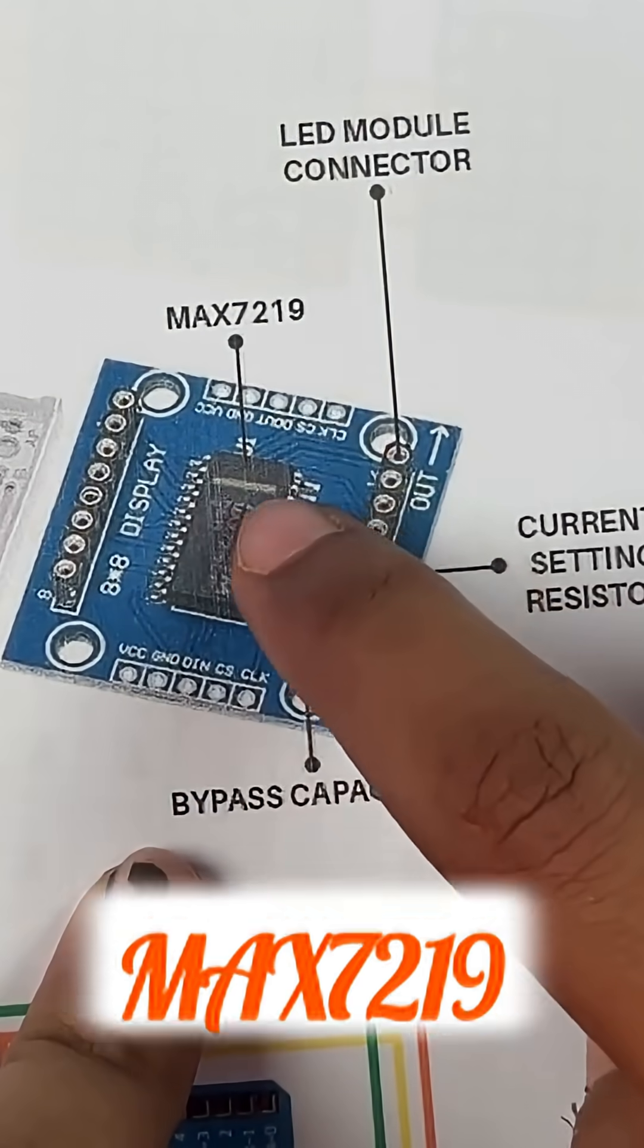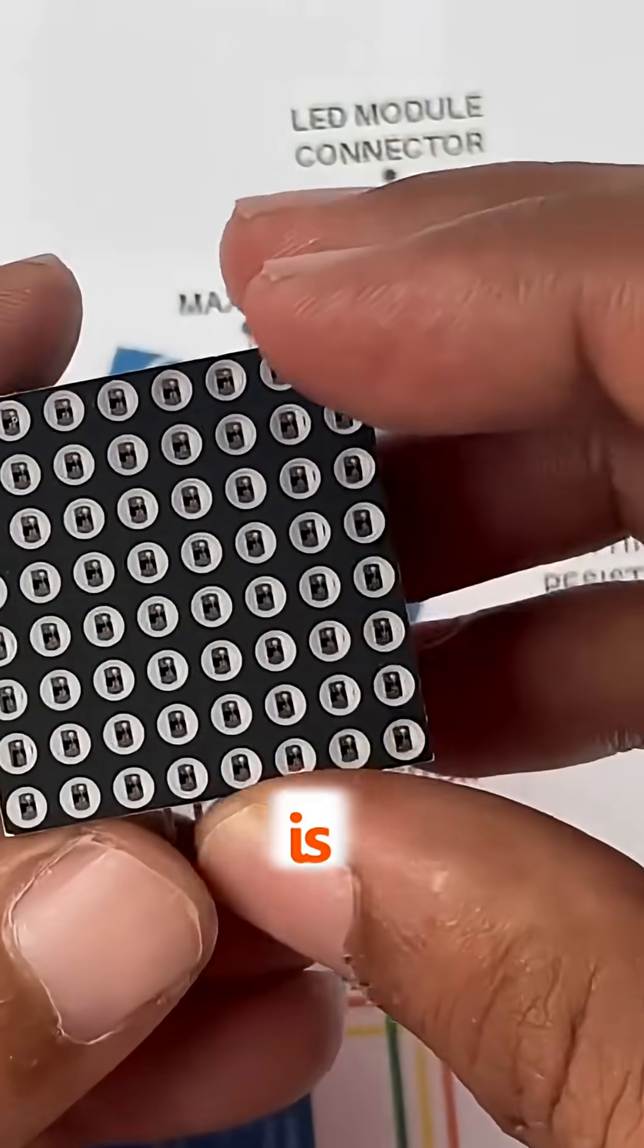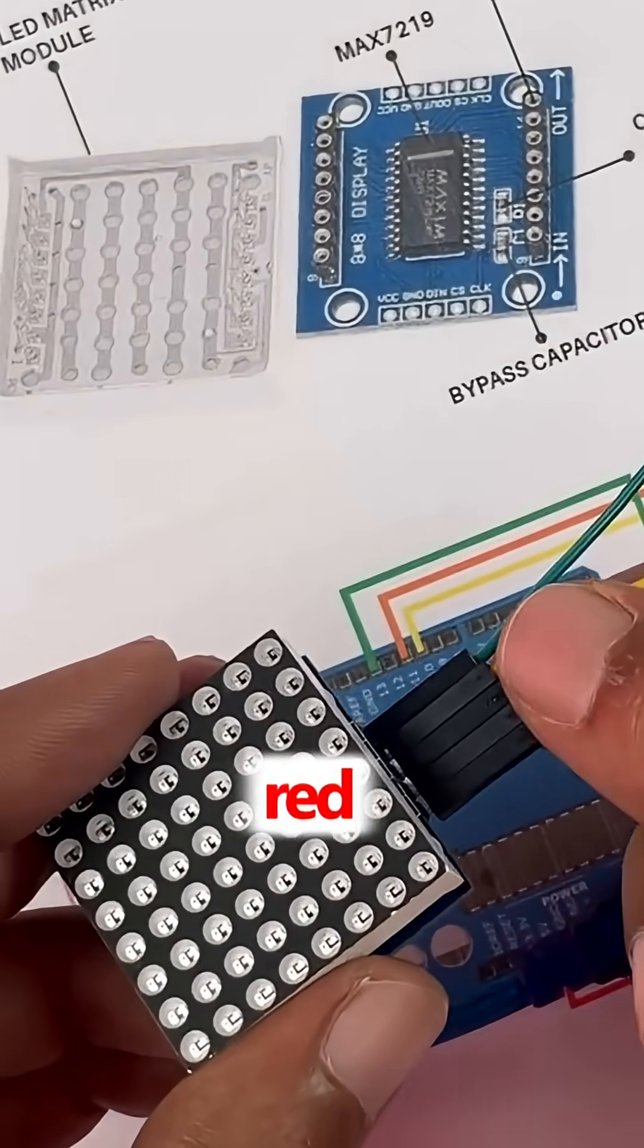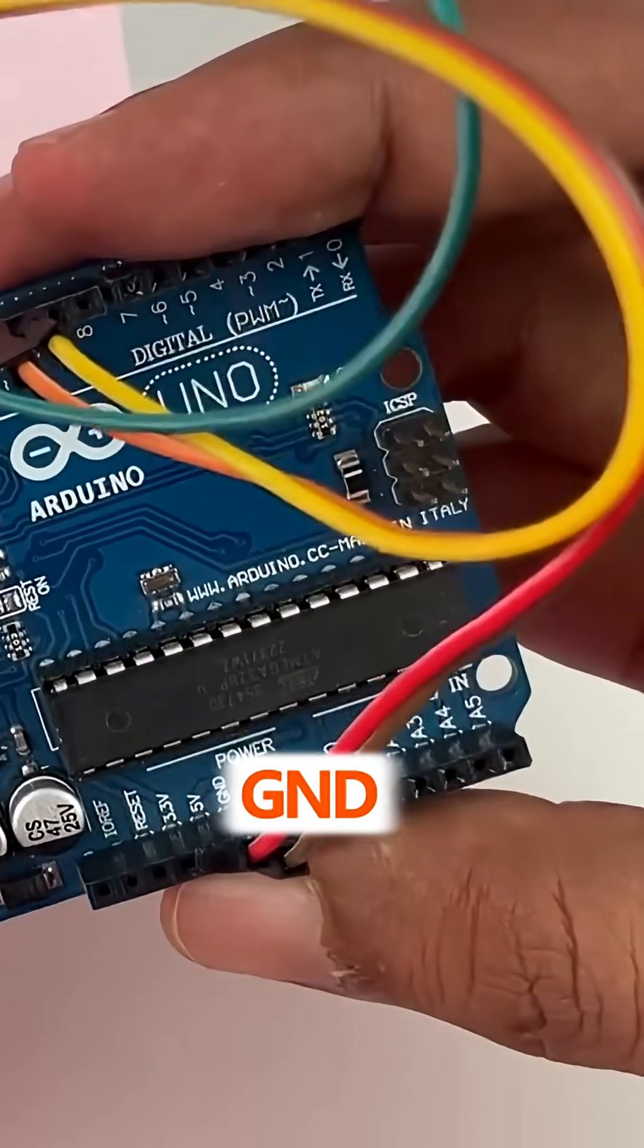What you have to understand is VCC and ground. The red and brown wires are connected to the 5 volt and the ground pin of Arduino.